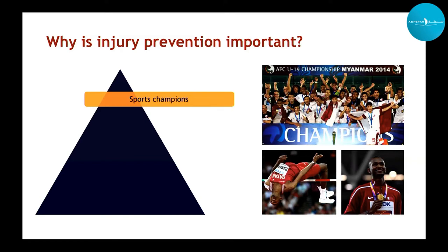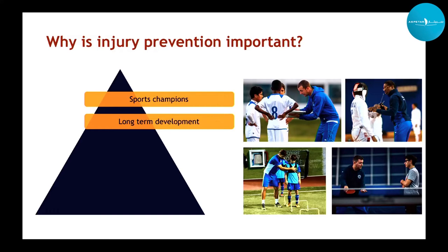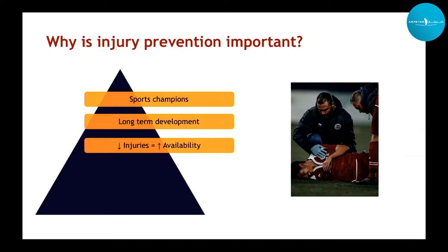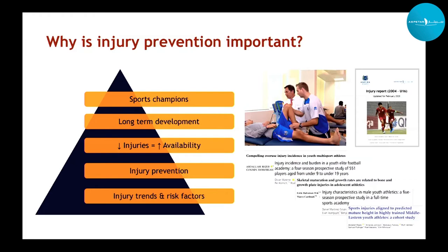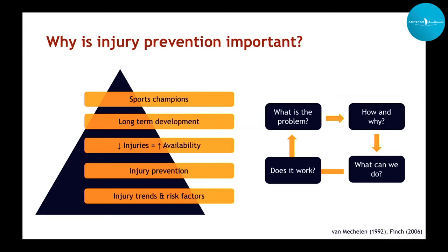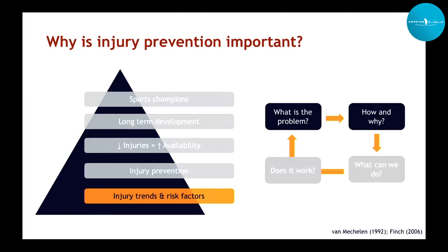In order to reach that goal, we're looking for some sort of long-term development. A threat to that is if a player gets injured, so he's not available to develop. So what we try to do is prevent injuries from happening. In order to know what we're trying to prevent, we need to know which injuries occur and what the risk factors are. We do injury surveillance reports and studies looking into risk factors. You've all seen this framework: we first try to see what the problem is, how and why injuries occur, what we can do about it, and whether that works in the end. Today we'll focus mainly on the first two aspects — the extent of the injury problem, and how and why injuries happen, with growth and maturation in mind.